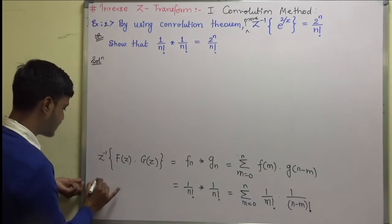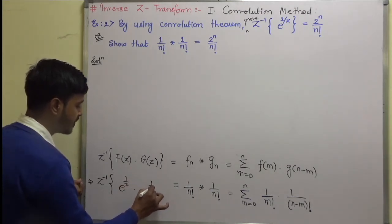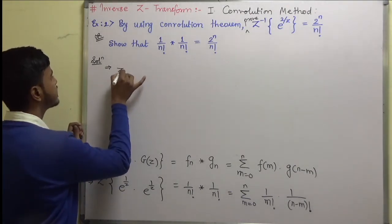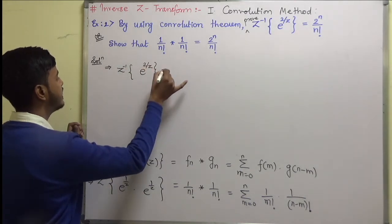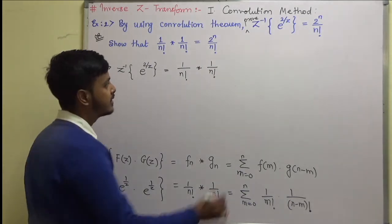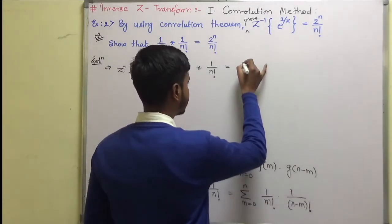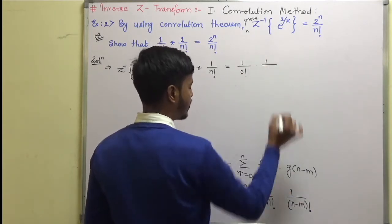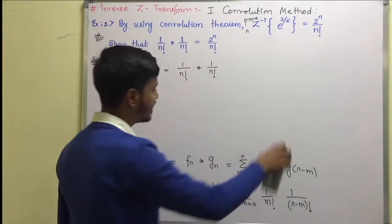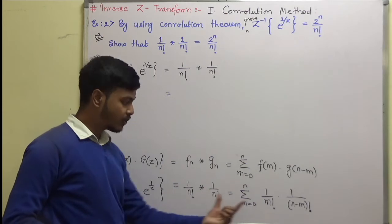On the left-hand side we have e^(1/z) · e^(1/z). So by the law of indices, z-inverse of e^(2/z) equals 1/n! convolution 1/n!. Now expand the summation: putting m = 0 gives 1/(0!) · 1/(n!). I am expanding this here as there are many terms.